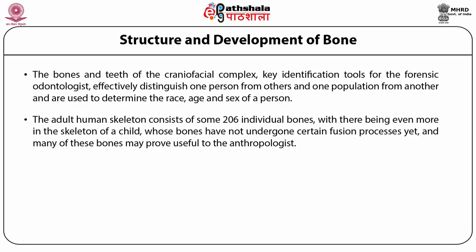The adult human skeleton consists of some 206 individual bones, with there being even more in the skeleton of a child whose bones have not undergone certain fusion processes yet, and many of these bones may prove useful to anthropologists. Levels of bone structure: first is gross, then microscopic, and chemical.